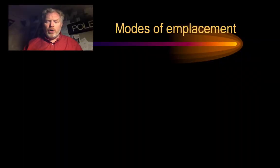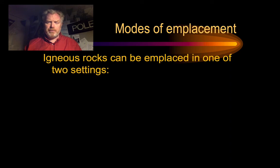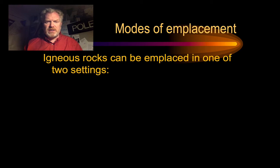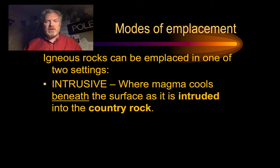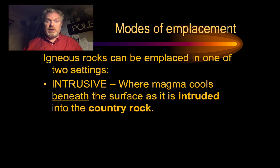There are two modes of emplacement — modes of emplacement are how an igneous rock gets to where we find it, and they can form in one of two different settings. Firstly, intrusive igneous rocks. This is where magma cools beneath the surface, where the rock is intruded or injected into the country rock. Country rock is a very general term for any of the rocks surrounding the igneous rock.